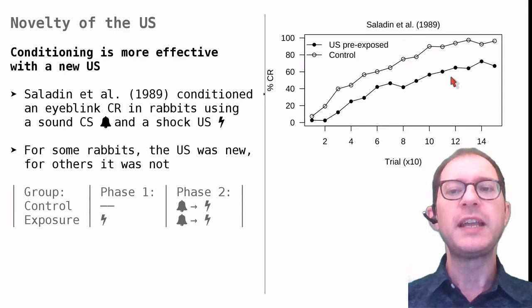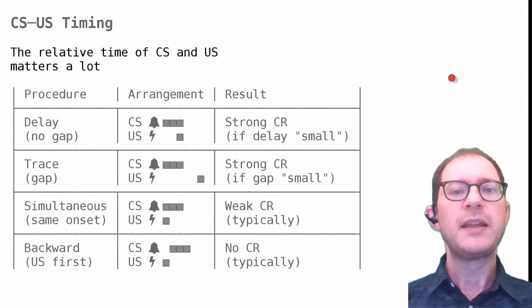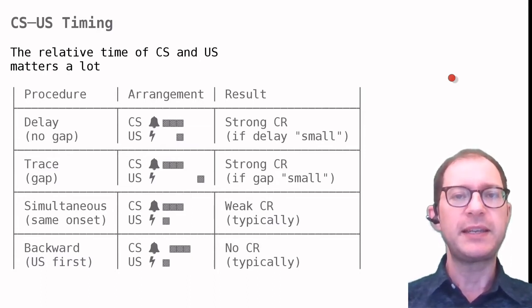We will see shortly how to interpret this result, but let's look at another set of findings first. The effectiveness of Pavlovian conditioning is strongly influenced by the temporal relationship between the CS and US, as we can see in this table.